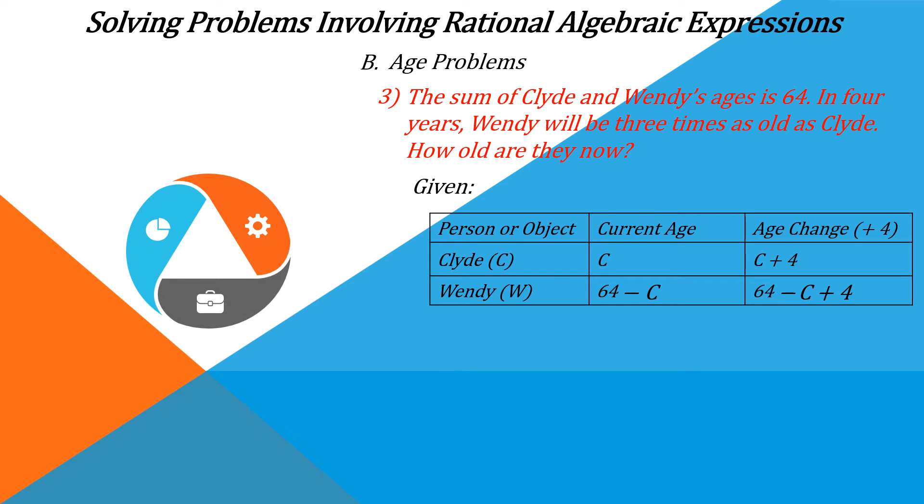It is a comparison of the ages of Clyde and Wendy. The current age is, let's say, Clyde's age is C. And Wendy's age compared to Clyde's age is 64 minus C.